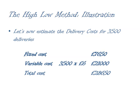That is our estimate of the delivery costs for those 3,500 deliveries. We've therefore used the high-low method to establish what our variable cost per unit was, our fixed cost, and then used those amounts to calculate or forecast the total cost for a given level of activity. And that's the high-low method.